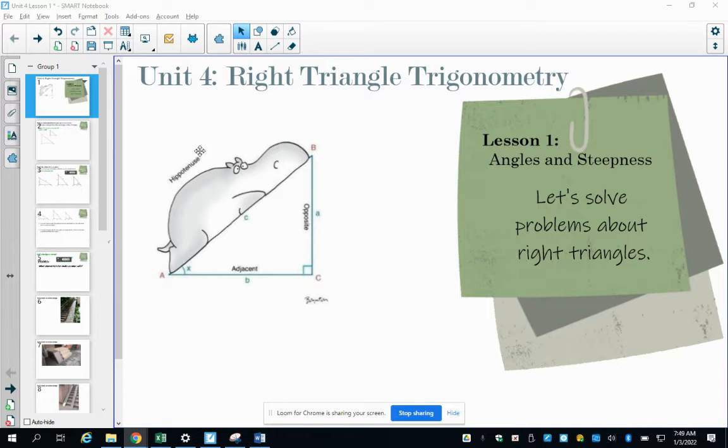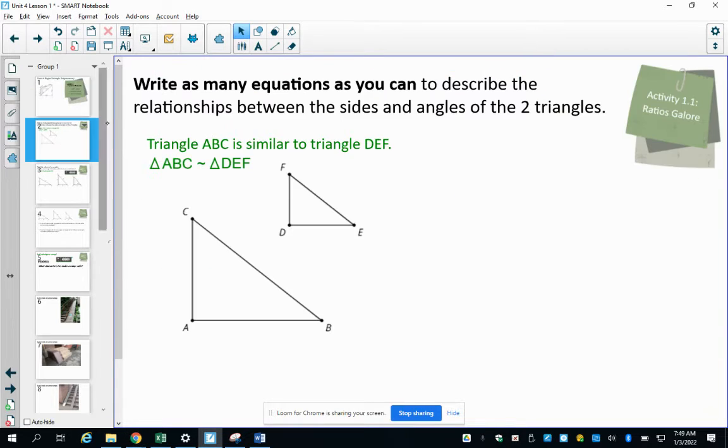In this video, we are going to start talking about unit four, which is right triangle trigonometry, and we're going to be looking at lesson one and solving problems about right triangles. First thing in the first activity, you will want to write down as many equations as you can, having to deal with these two similar triangles. Pause the video and then come back.